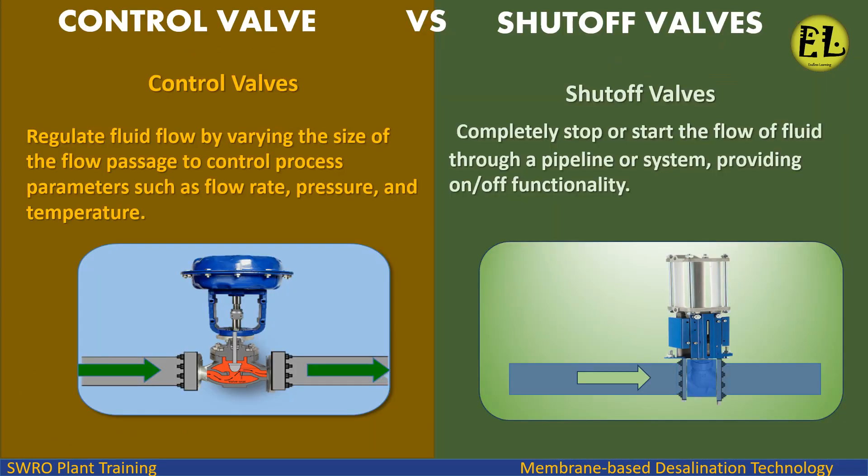Control valves regulate fluid flow by varying the size of the flow passage to control process parameters such as flow rate, pressure, and temperature. Shutoff valves completely stop or start the flow of fluid through a pipeline or system, providing on/off functionality.